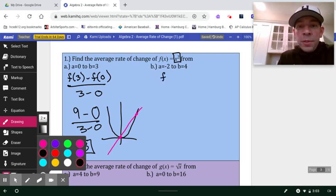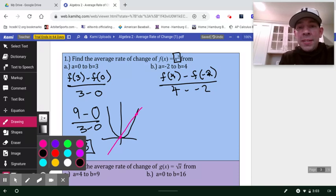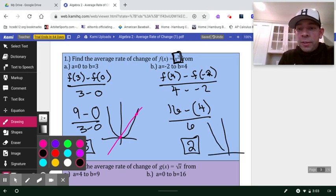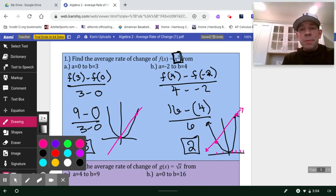On to this next one. We want to do f of 4 minus f of negative 2, all over 4 minus negative 2. Substituting a 4 into this function is going to make 16. Substituting a negative 2 is going to make positive 4. And on the bottom, 4 minus a negative 2 is going to make 6. 12 divided by 6 makes 2. So now there's my average rate of change. Does that seem reasonable? The slope between those two points we're saying is positive 2. That seems reasonable.